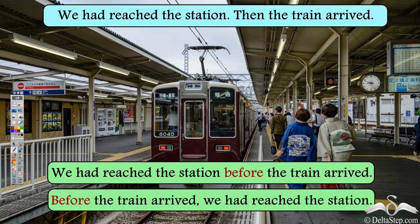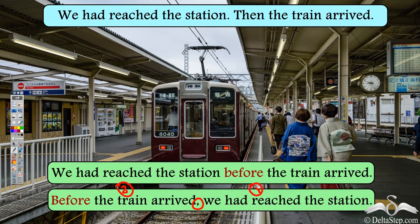We can also start the sentence with 'before': 'Before the train arrived, we had reached the station.' Note the comma here. We need to put the comma to make it clear which action happened first and then which action happened. With 'before,' we write the action that happened later in the main clause, because we want to say 'earlier than which action.' So this part — 'before the train arrived' — is written first, and then the rest of the sentence.